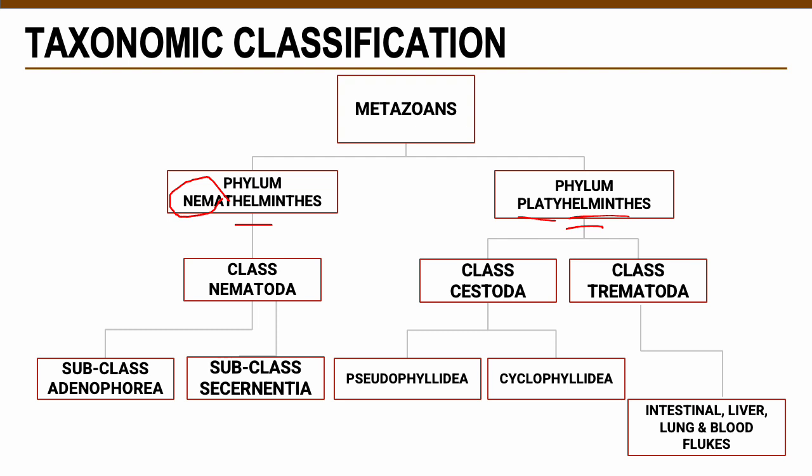Under phylum Nematelminths we have one class: class Nematoda, or nematodes. Nematodes are divided based on the location of their adults and also by subclass into two types: subclass Adenophorea and subclass Secernentea, which we'll discuss later on.